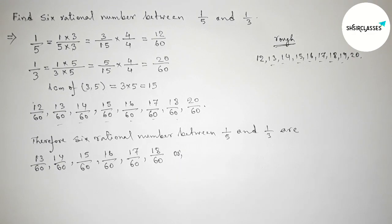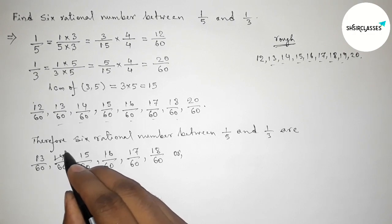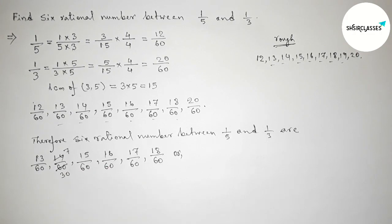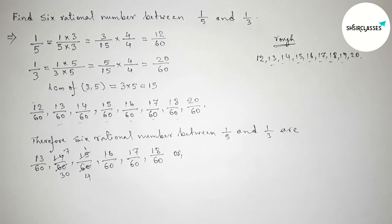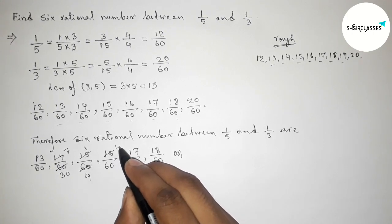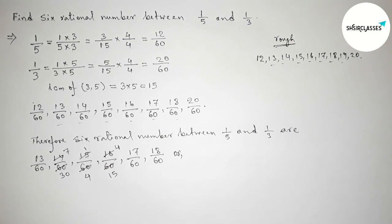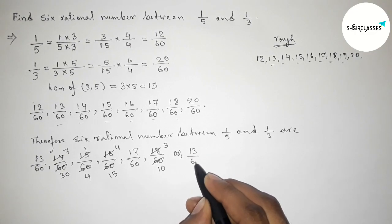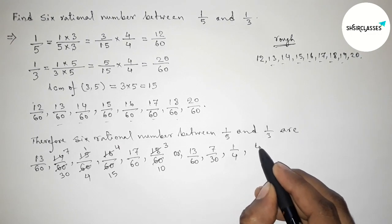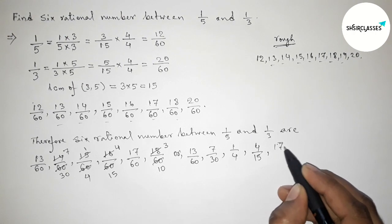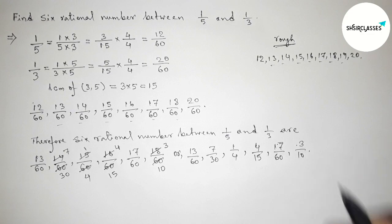Simplifying: 14/60 divided by 2 gives 7/30. 15/60 divided by 15 gives 1/4. 16/60 divided by 4 gives 4/15. And 18/60 divided by 6 gives 3/10. So the final simplified answers are: 13/60, 7/30, 1/4, 4/15, 17/60, and 3/10.